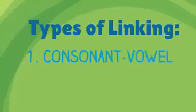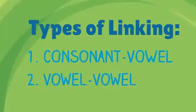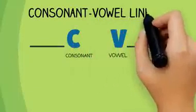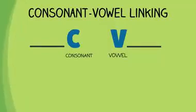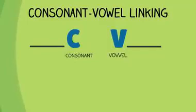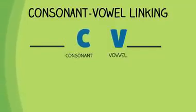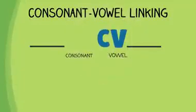There are two main types of linking: consonant-vowel linking and vowel-vowel linking. Consonant-vowel linking occurs when one word ends with a consonant sound and the next word begins with a vowel sound. When this happens, we pronounce the words as if the consonant sound has moved from the end of the first word to the beginning of the next word.